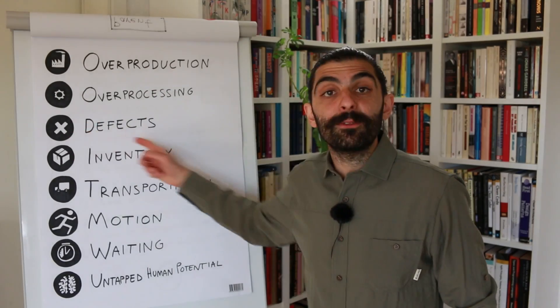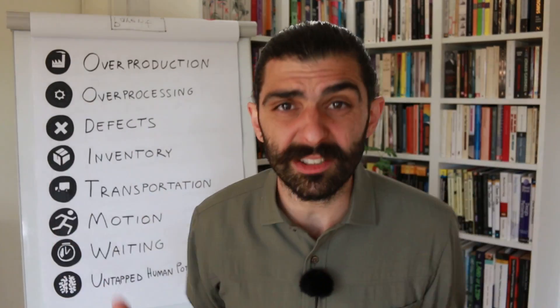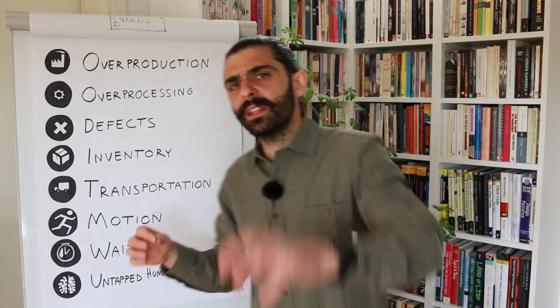Number three: defects. Defects cause delays, reduce customer satisfaction, and can in some cases be outright dangerous. In software, this usually means bugs in the code. The muda of defects is thought of as the problem of building the thing right, rather than building the right thing — so it's about verification, not validation. In other words, this is not a question of delivering the wrong thing, it's a question of delivering a broken thing. Bugs have been around since the dawn of software.